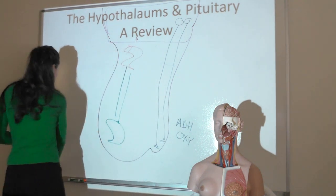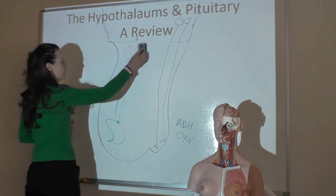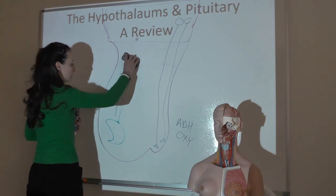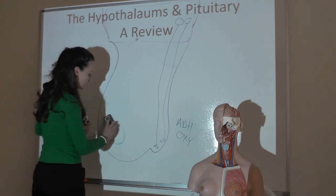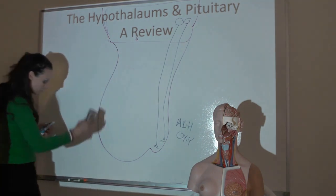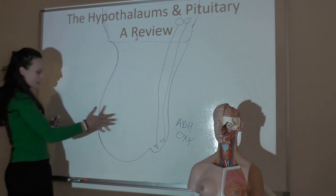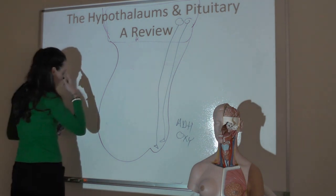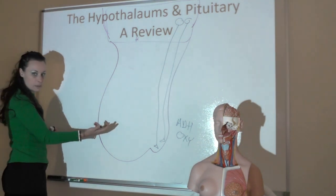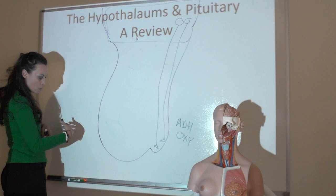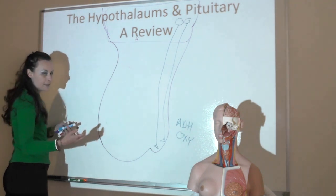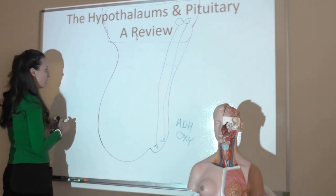On the anterior side, the hypothalamus releases releasing and release-inhibiting hormones that affect different cells in the anterior pituitary, which will then release hormones that enter the blood and affect other targets in the body.